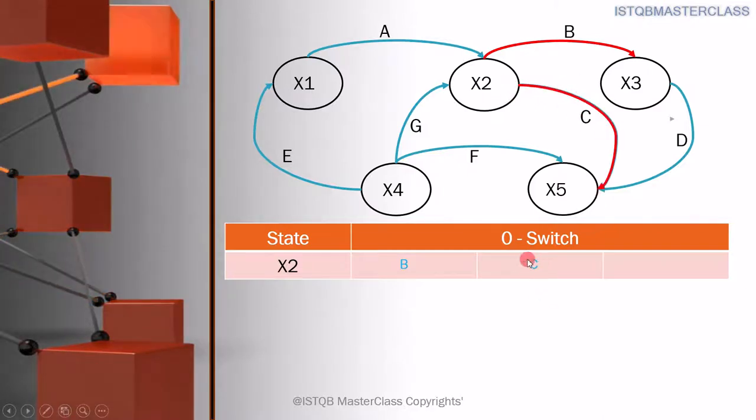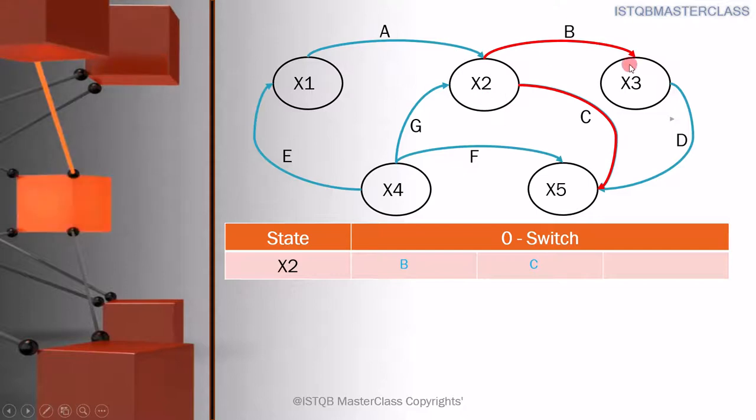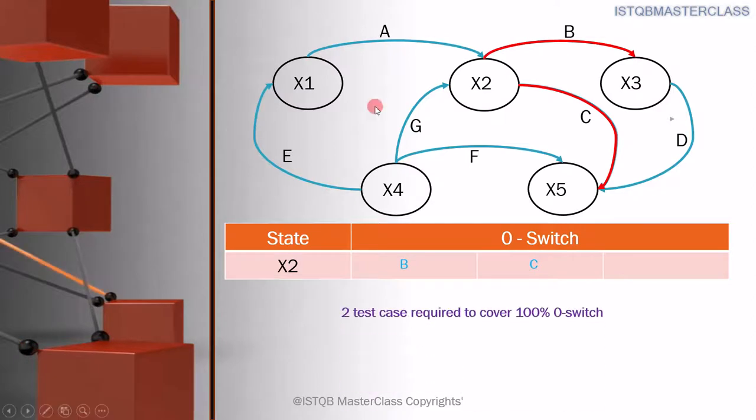The next one is C. If you see X2, there are no more outgoing transitions. Incoming transitions are there, but we have to test the outgoing transitions in order to cover 0-switch. That is why we need two test cases to cover 100% 0-switch.